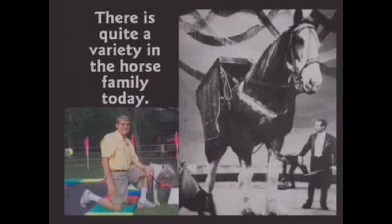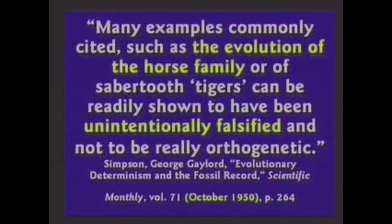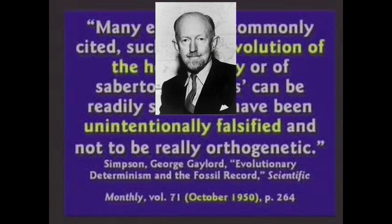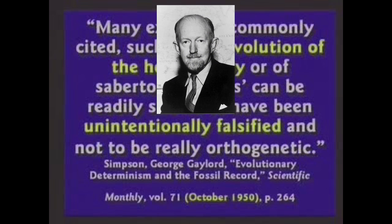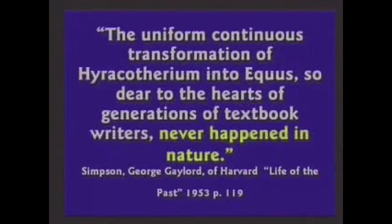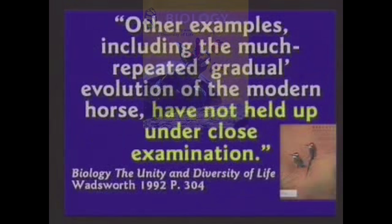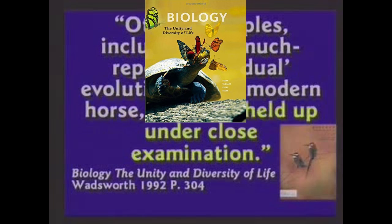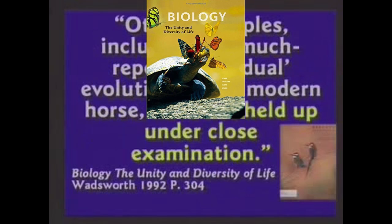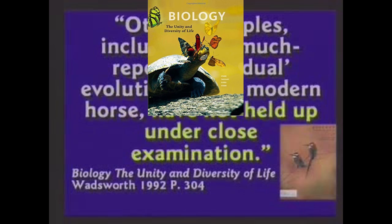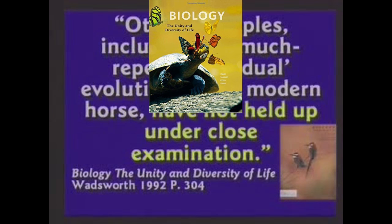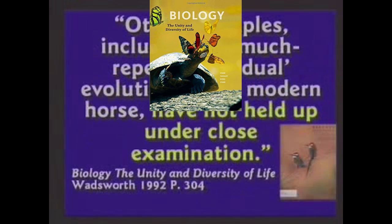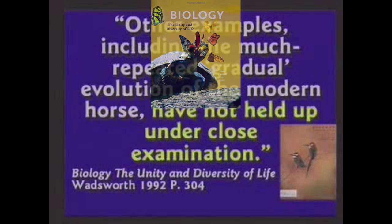And this is what scientists were discussing in each of Hovind's quotes. George Gaylord Simpson couldn't have been more clear when he stated that the evolution of the horse is not orthogenic, and that the common model at that time never happened in nature. That's also what CeCe Starr, Ralph Taggart, Christine Evers, and Lisa Starr were referring to in Biology: The Unity and Diversity of Life, Chapter 18, Organizing Information About Species — which Hovind wrongly attributed to their publisher, Wadsworth.